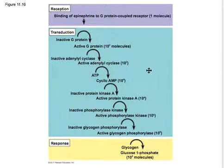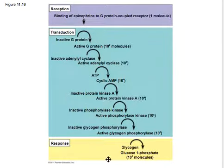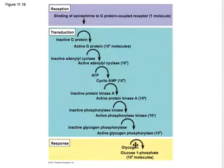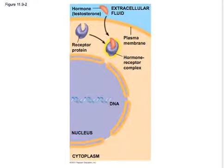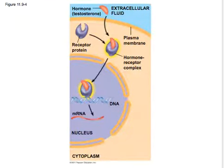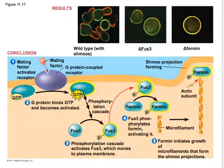Essentially, transduction is just making the message readable — it's kind of like a message sent out in Morse code that has to be translated into our regular alphabet so we understand what's going on. Then it gets into the nucleus and says 'make that.' So here's the steps broken down: here's testosterone as an example — a signal comes in, it's received, it's transducted, and the response happens in the nucleus. mRNA is produced, so transcription and translation happen, and we make a new protein in response.